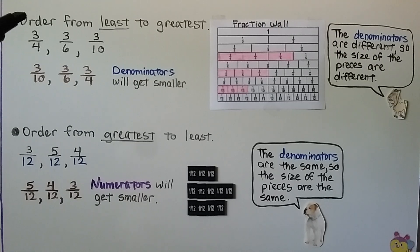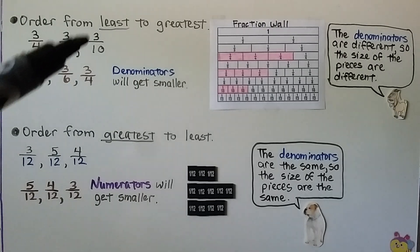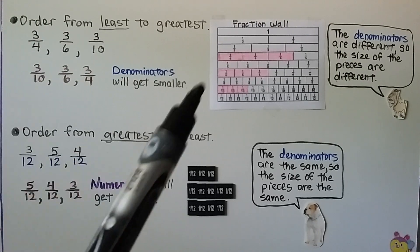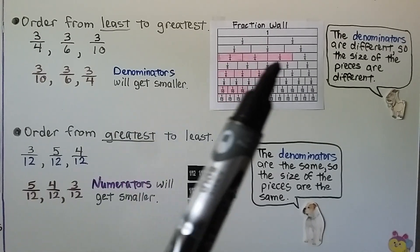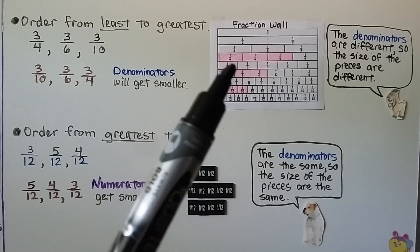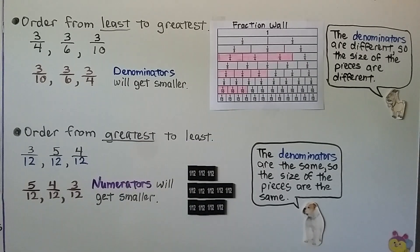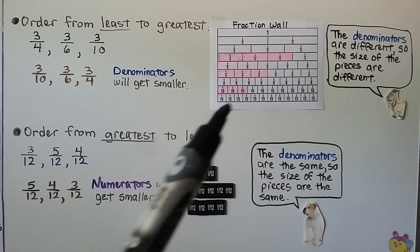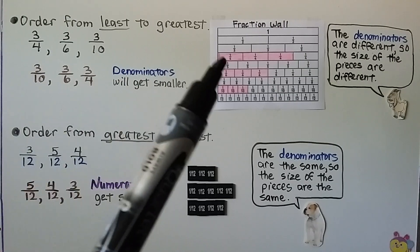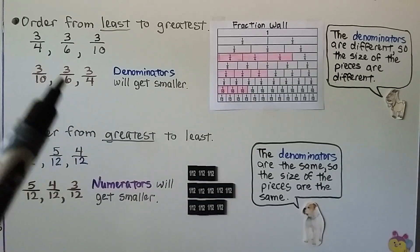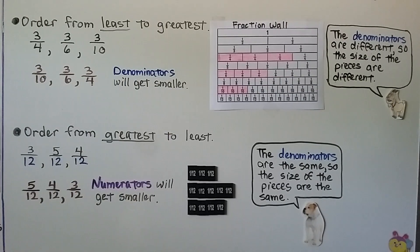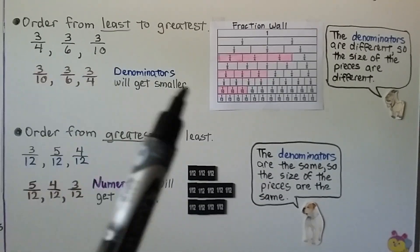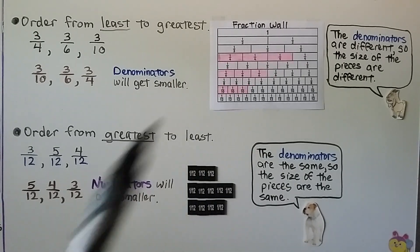We need to order three-fourths, three-sixths, and three-tenths from least to greatest. They all have the same numerator, so we can use a fraction wall: three one-fourth pieces, three one-sixth pieces, and three one-tenth pieces. The denominators should get smaller as the fractions get bigger. Three-tenths is the shortest, so it goes first; three-fourths is the longest and goes last; three-sixths goes in the middle. The denominators are different, so the sizes of the pieces are different — we're using all different sized unit fractions.